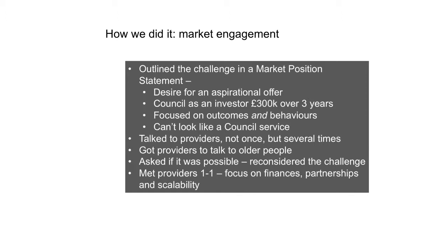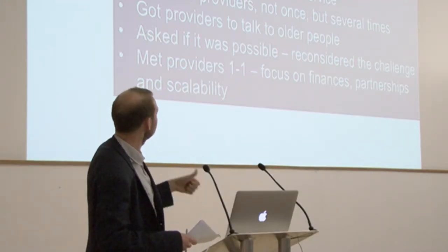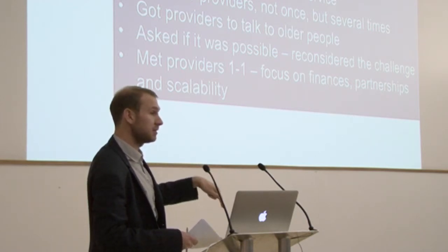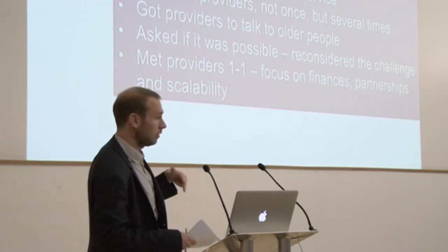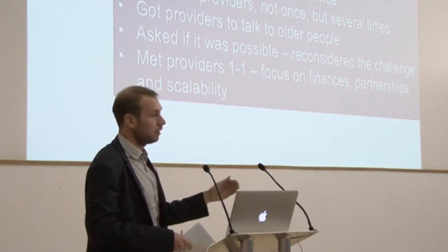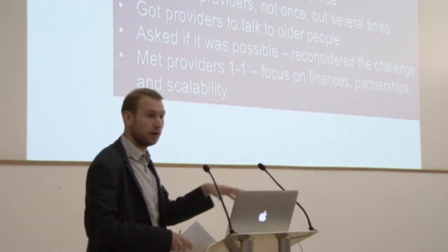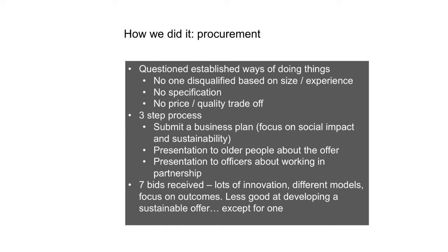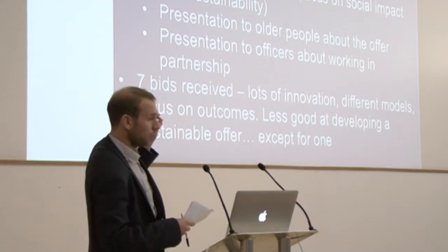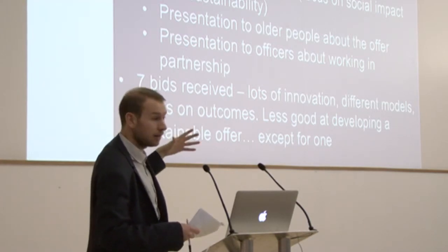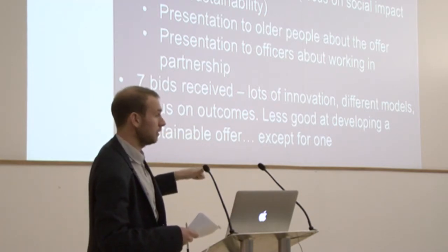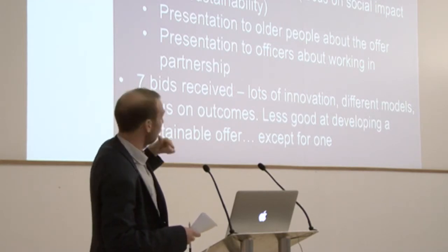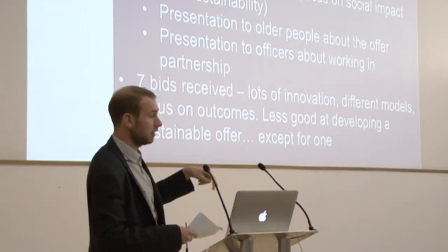The third group in this process is providers, because we weren't going to do this ourselves. We outlined a statement saying what we were looking for: it had to be aspirational, our investment was £300k, but then it needed to be sustainable after that and stay in the community. It can't look like a traditional council service. We talked to providers a lot, linked providers and older people up to talk together, and met with people one-on-one to look at financial models. Then we redid the statement — so again, it's iterative. One challenge is that council procurement processes make it hard to prototype. We questioned some traditional ways we do procurement but still had to go through the process. We didn't exclude anybody based on organisation size or track record, didn't focus on price — we focused on quality and sustainability. We asked people to submit a business plan and present to older people who would assess their ideas.